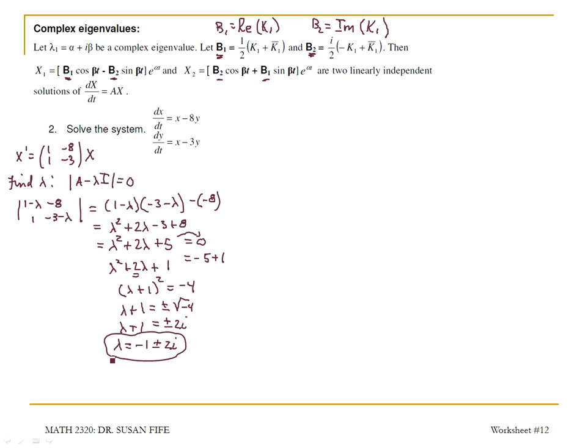Now to find the eigenvector, you really only have to find one eigenvector. You don't have to use lambda equals negative 1 plus 2i and lambda equals negative 1 minus 2i. I'm going to use just the plus 2i.